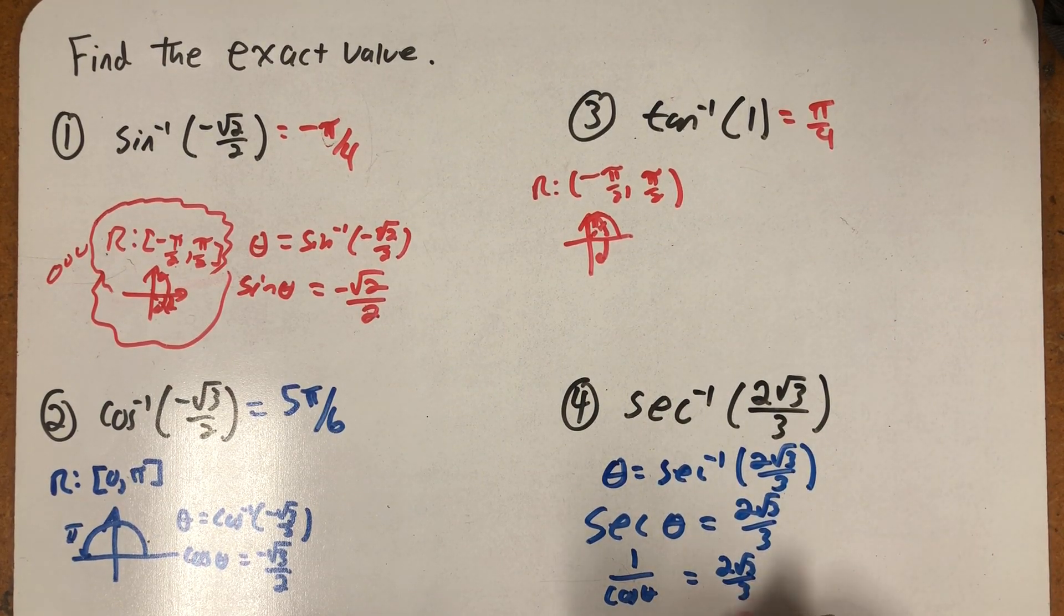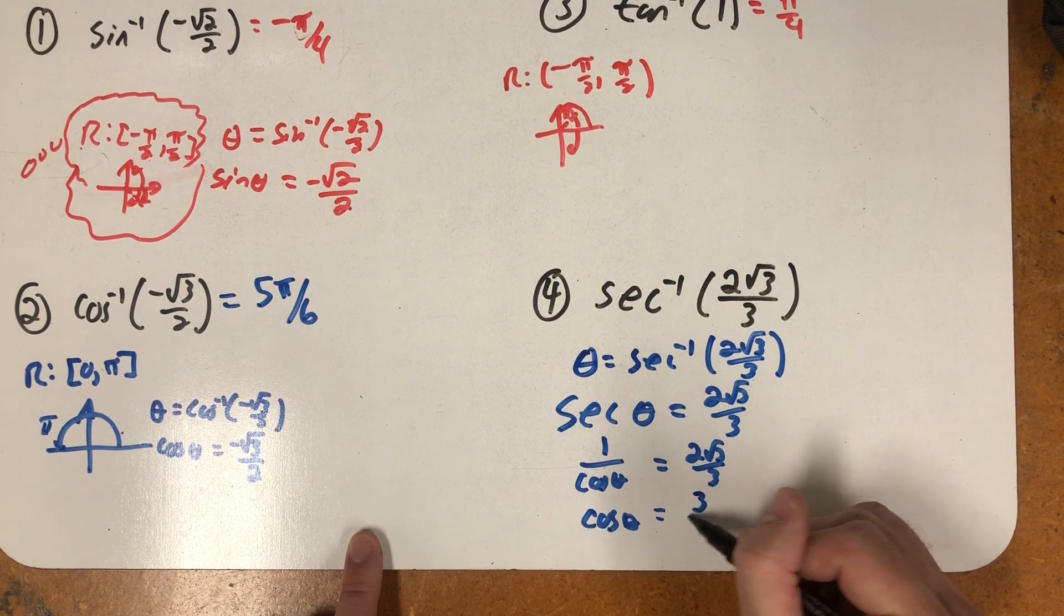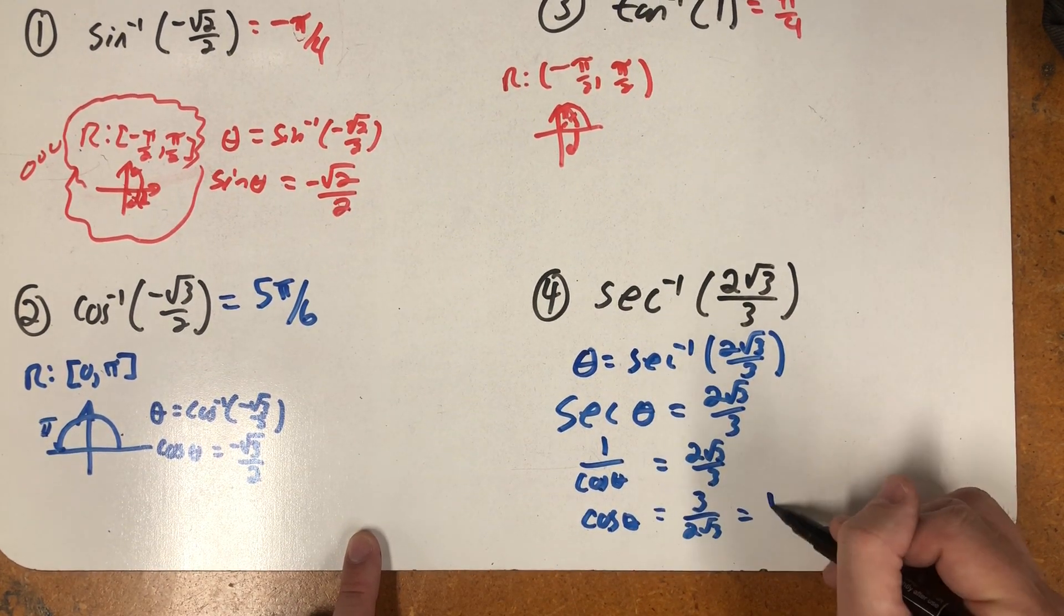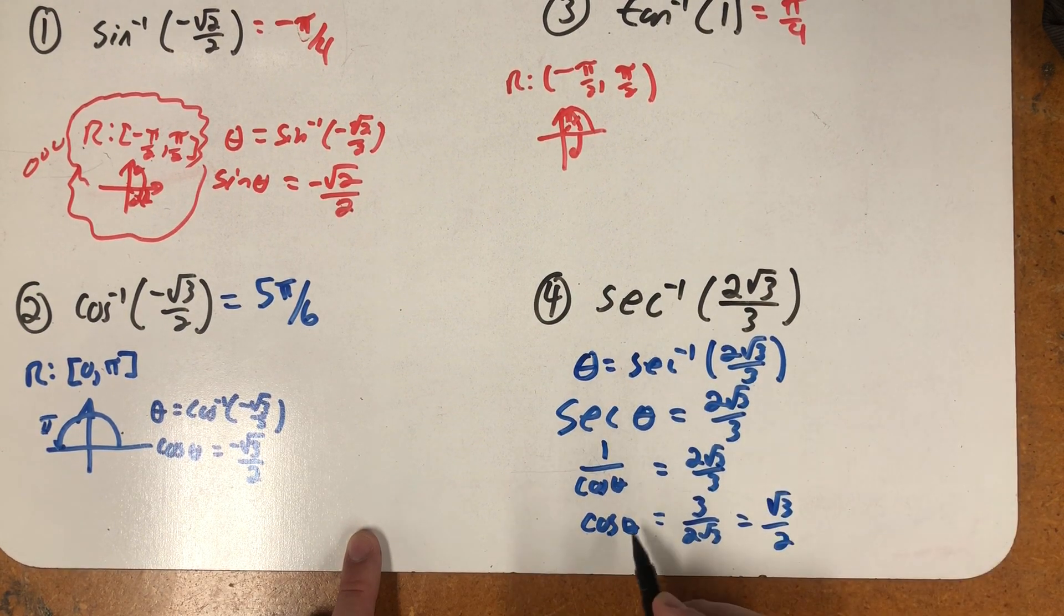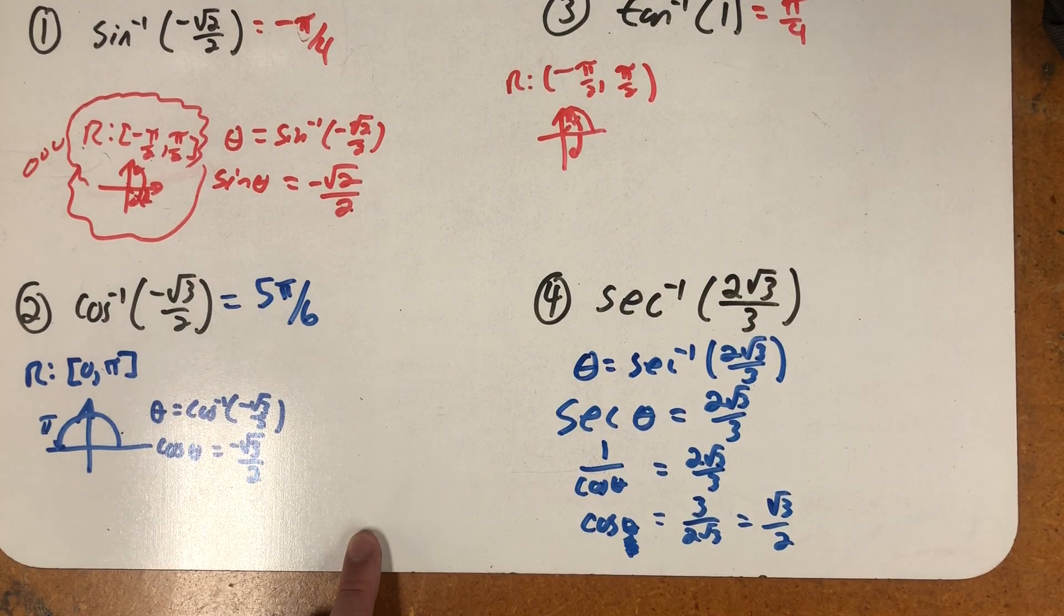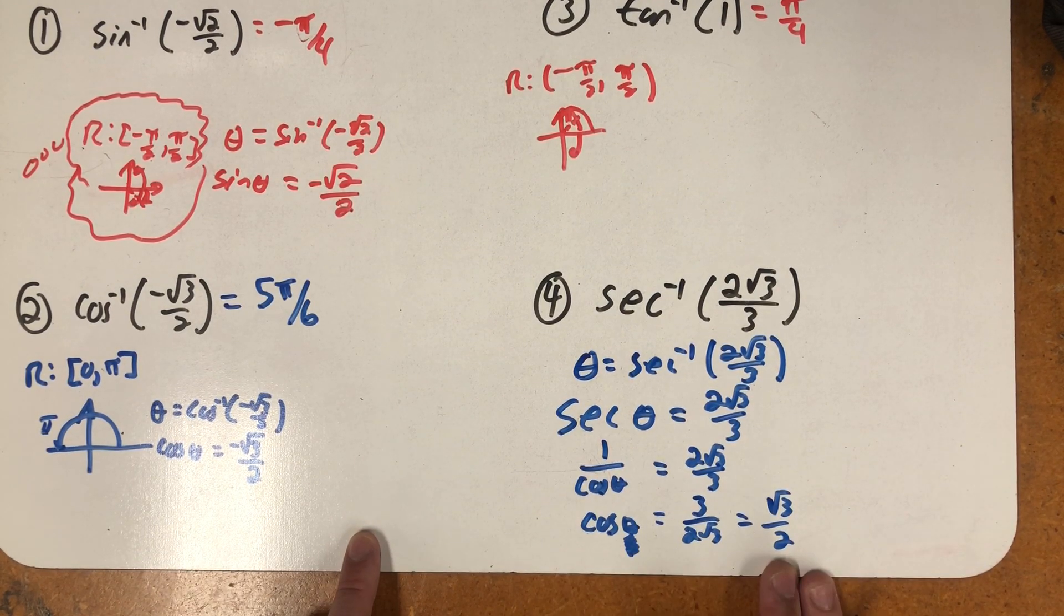So I could take the reciprocal of both sides of that equation, and cosine theta would be three over two root three. And if I simplify that, I'd have root three over two. So if I'm thinking about this problem, secant inverse of two root three over three, I'm really looking for a place where cosine theta is equal to root three over three.